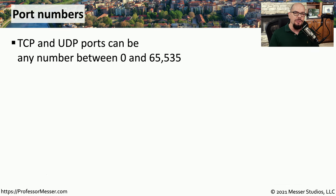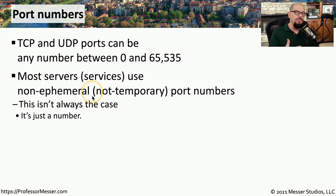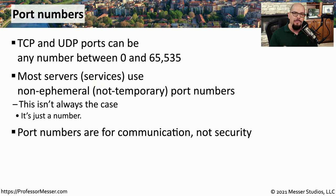Port numbers are used so that we know where to send data. They can be any number between 0 and 65,535, and TCP port numbers are only used for TCP while UDP port numbers are only used for UDP. If you're working with a service on a particular device, it's probably using a non-ephemeral port number in the range 0 to 1,023, but you should confirm what port numbers your service uses. These port numbers are only used to communicate between devices — they're not intended to be used as a security function.